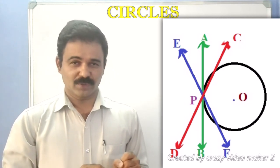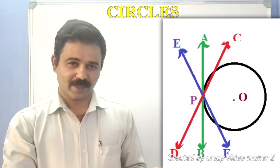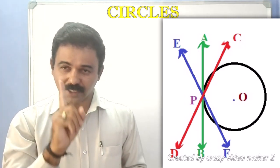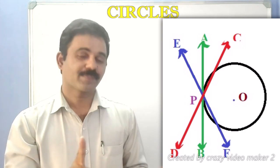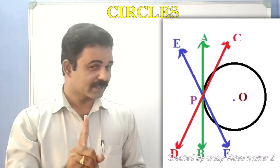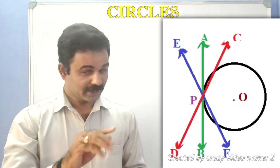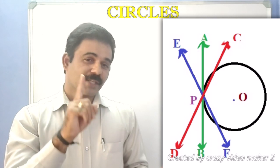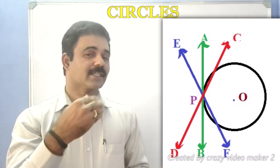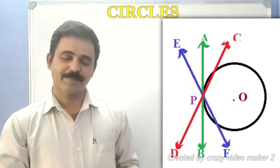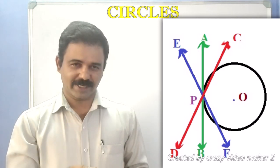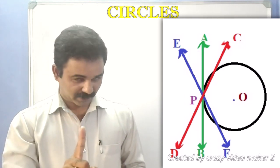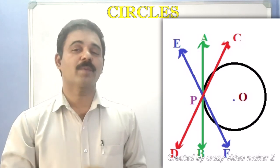Three straight lines are shown. There is a straight line AB, a straight line CD, and a straight line EF — all intersecting at point P. The straight lines AB, CD, and EF all pass through intersected point P. AB is the tangent to the circle because it intersects the circle at only one point P.